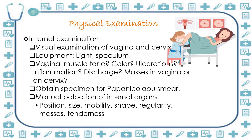For the internal examination, it is important to visualize the vagina and the cervix. Equipment needed are light and speculum. Inspect for vaginal muscle tone, color, rugations, inflammation, discharge, and masses in the vagina or on the cervix. You can obtain a specimen for Pap smear or Papanicolaou smear, and perform manual palpation of internal organs to assess position, size, mobility, shape, regularity, masses, and tenderness.